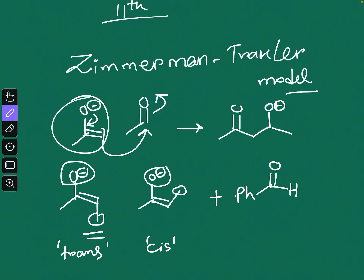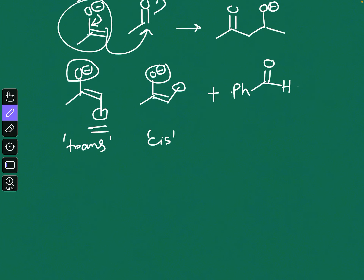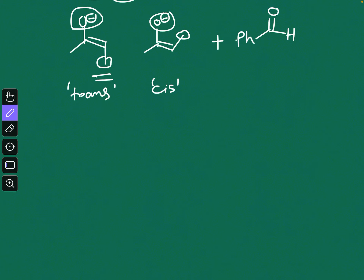You can predict the outcome by applying the Zimmermann-Traxler model, which we will also use in many other stereoselective aldol reactions and their variations. The basis of this model is that the aldol reaction is not as simple as it looks — it actually goes through a six-membered transition state. Generally, a metal like lithium is involved in this transition state.